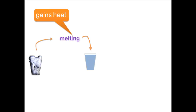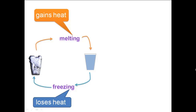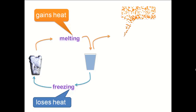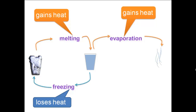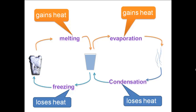To summarize the phase changes of water: ice gains heat to become water — this is called melting. Water loses heat to become ice — this is called freezing. Water gains heat to become water vapor or gas — this is called evaporation. Gas or water vapor loses heat to become water — this is called condensation.